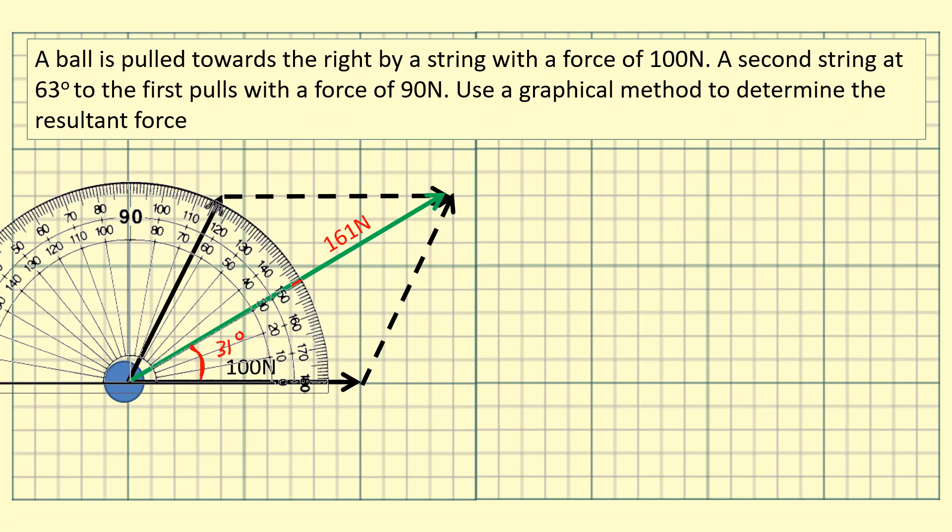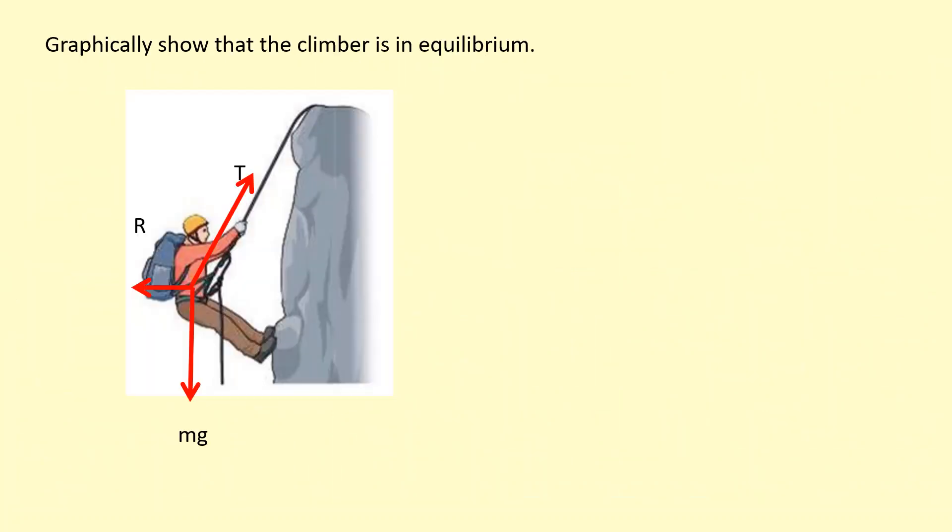Graphically show that the climber is in equilibrium. If the person is in equilibrium that means the resultant force is zero. So if you add the forces tip to tail you should get a closed shape like this. It doesn't matter what order you do it. I'm starting with weight, I'm adding on the reaction force and then adding on the tension, and this gives a closed shape showing that the resultant force is zero.